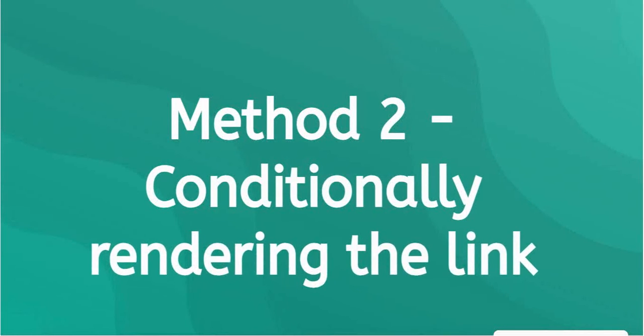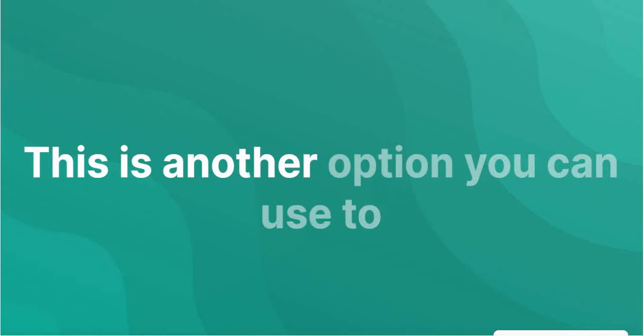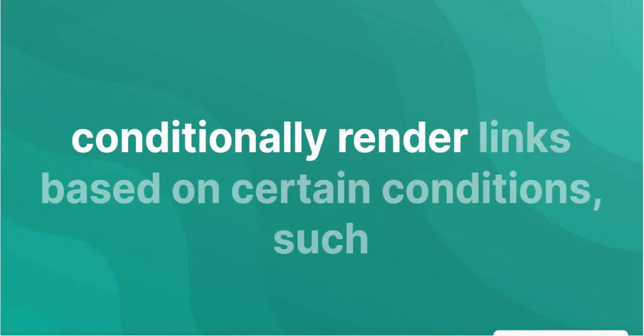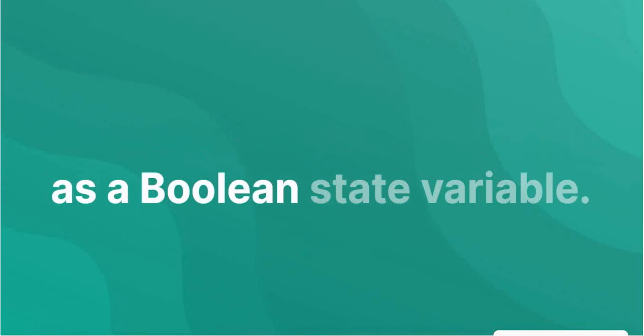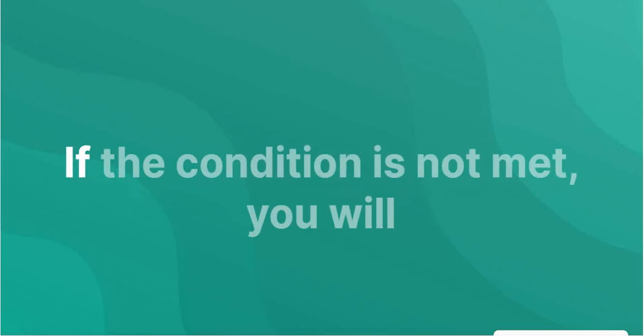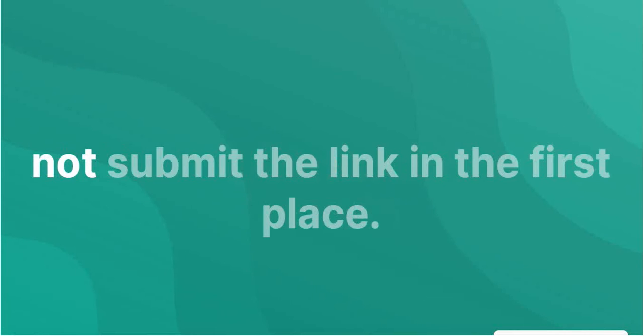Conditionally rendering the link. Another option is to conditionally render links based on certain conditions, such as a boolean state variable. If the condition is not met, you will not render the link in the first place.